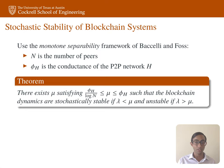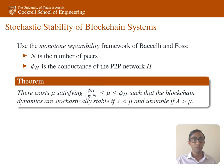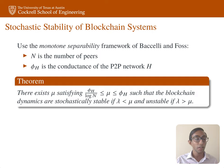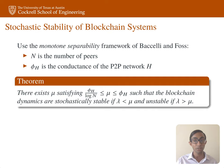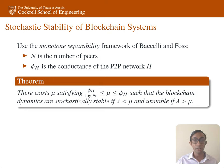The natural question is: when are the communication dynamics in a blockchain network stochastically stable? We use the monotone separability framework from Baccelli and Foss, a generalization of stochastic stability for queuing networks to general stochastic networks. Let N be the number of peers and φ_H the conductance of peer-to-peer network H. Using monotone separability, we find there exists μ satisfying φ_H / log(N) ≤ μ ≤ φ_H, such that the blockchain dynamics are stochastically stable when λ < μ and unstable when λ > μ.